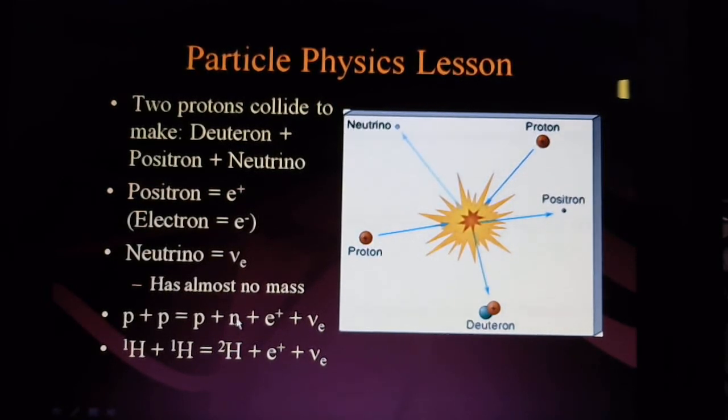These two pieces up here are represented by this one symbol down here. That's this particle, the deuteron. Then you also have coming out the positron and you also have coming out the neutrino. Okay, now that's your particle physics lesson. How does this all go together to make a fusion process?